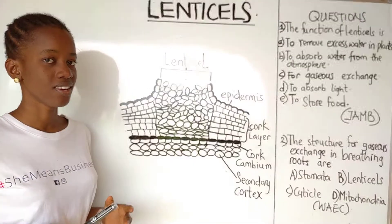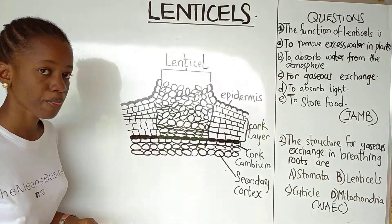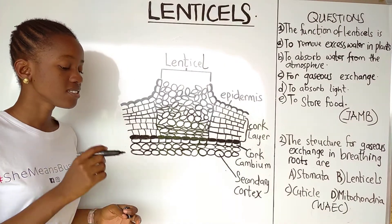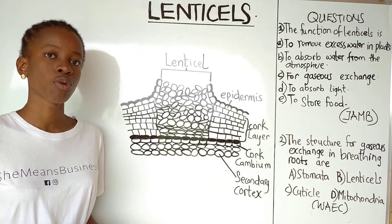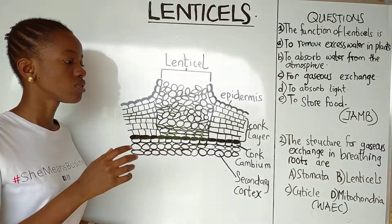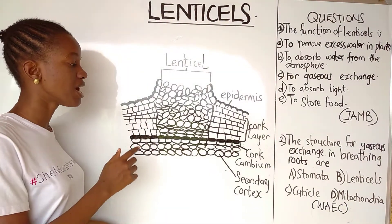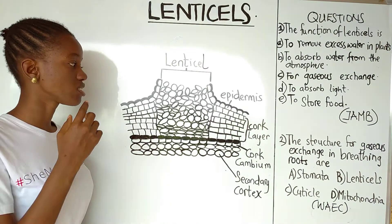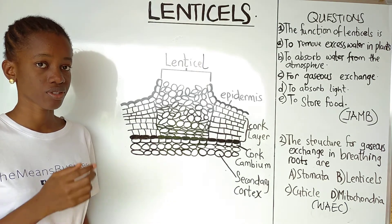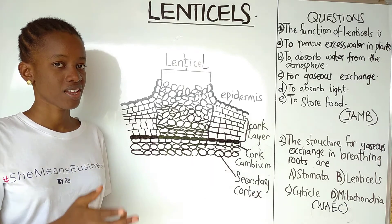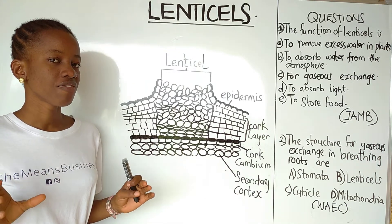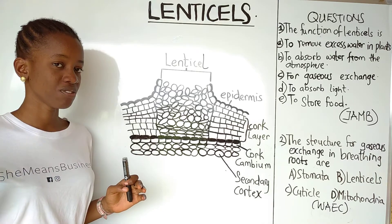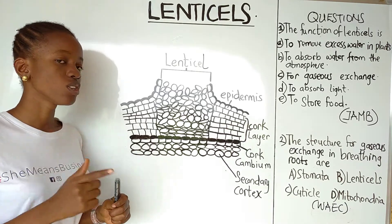Today we are going to be looking at lenticels. What are lenticels? Lenticels are small pores or small openings found in the bark of woody stems and roots. The spelling of bark is B-A-R-K, not B-A-C-K.